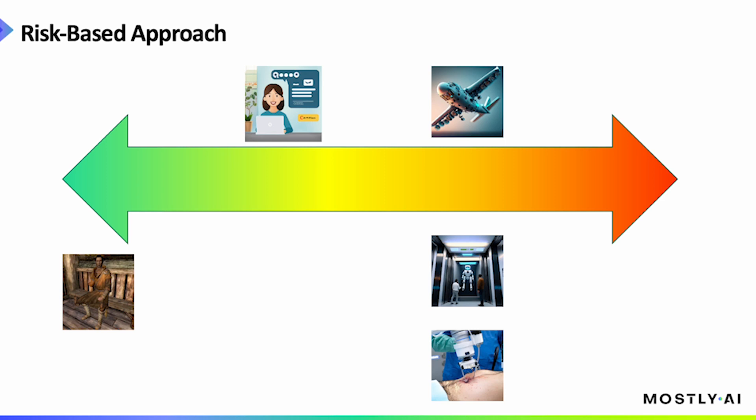And on the very other end of the spectrum are prohibited AI practices. The list of fully banned applications is still being discussed and actually highly debated, but it will likely include our minority report scenario AI. It will include social scoring applications and manipulative subliminal techniques.